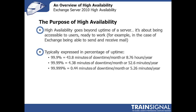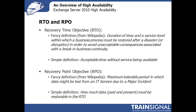Some other things to consider include your RTO and RPO. First, you have your Recovery Time Objective, or RTO. The formal definition is the duration of time and service level within which a business process must be restored after a disaster or disruption in order to avoid unacceptable consequences associated with a break in business continuity. The simple definition is the acceptable time without a service being available — basically the amount of time you can deal with the service being down.